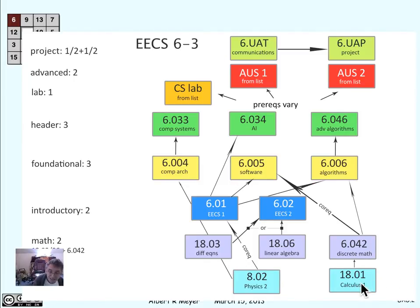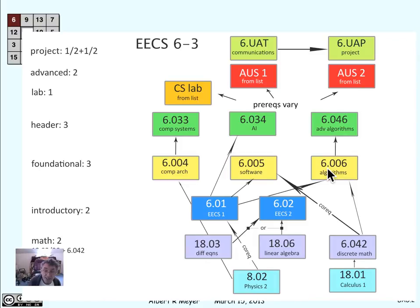So what does it mean? Let's look at this vertex corresponding to the first term calculus class 1801, and there's an edge that points to 6042. That's because, if you look at the catalog, 6042 lists 1801 as a prerequisite. If you look at the introductory algorithms class 6006, you'll find it has two listed prerequisites: 6042 and 601. The fact that they're explicitly listed as prerequisites is why there's an arrow from 601 to 6006, and from 6042 to 6006.